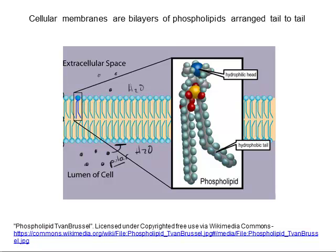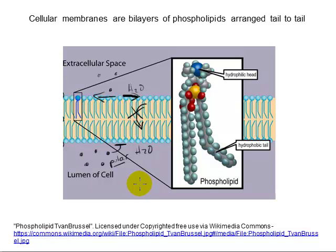We'll talk a lot more about regulation of membrane transport later in the course, but right now it's important to recognize the link between the chemical properties of the phospholipids and the function of the membrane as a protective barrier against the uncontrolled movement of materials in and out of the cell. These phospholipids are associating with one another driven by interactions — or lack thereof — with water molecules. They are not covalently bonded to one another, so membranes are fluid structures which allow molecules to move laterally past one another in the plane of the membrane. We don't see much of phospholipids flipping from the outer leaflet to the inner leaflet, but lateral diffusion is tolerated.